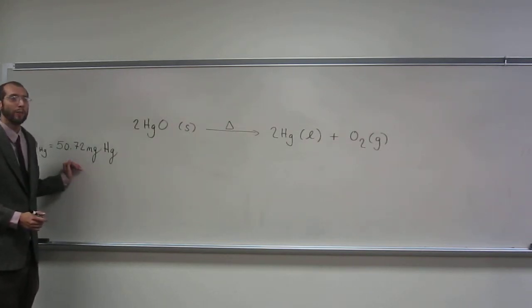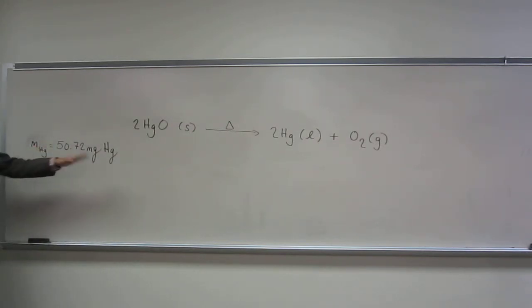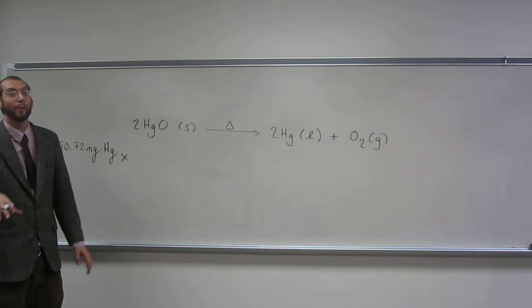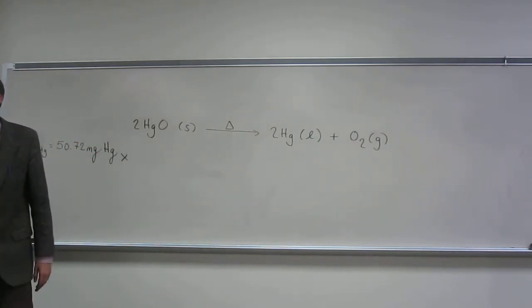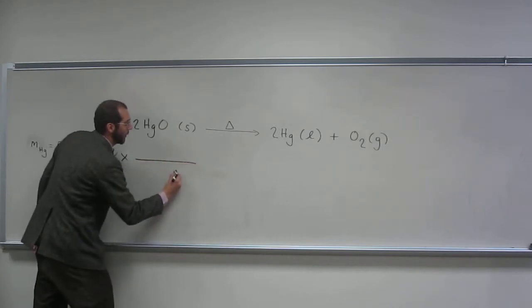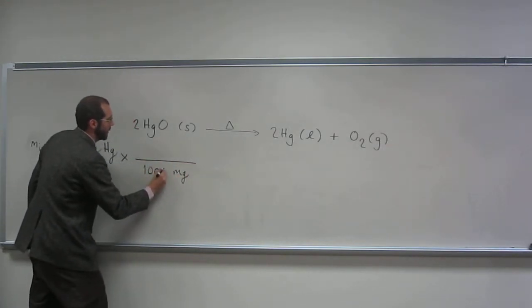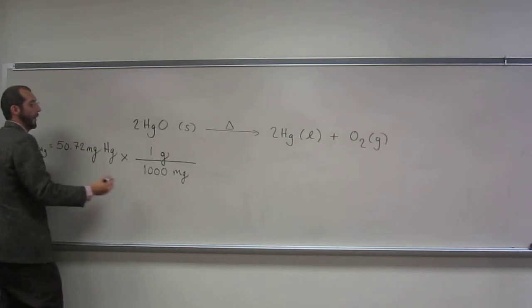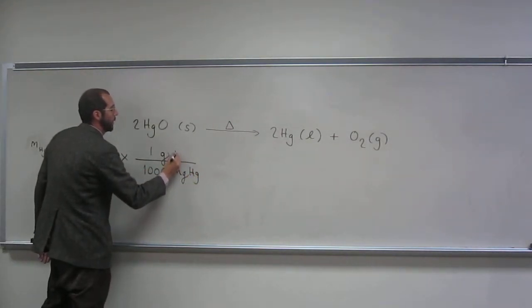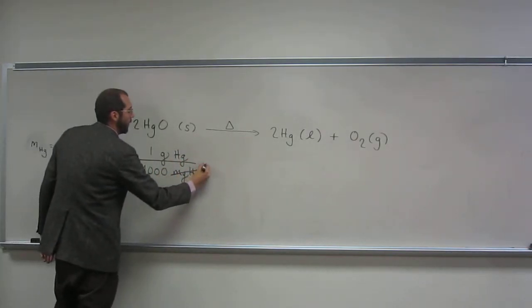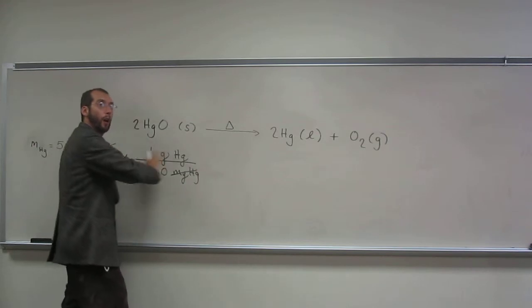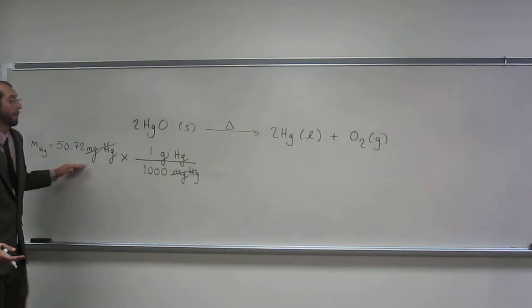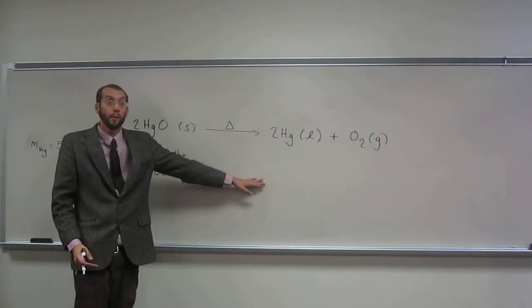So if I need grams, what's the first thing I need to do? Divide by a thousand. Well, to convert milligrams to grams, right? We're going to do baby steps, not just divide by a thousand, but show the whole conversion. So on the bottom is going to be milligrams, of course, and there's going to be a thousand of them. And on the top, one gram of mercury. So now my units should be grams of mercury. Is everybody cool with that?